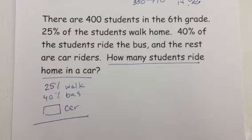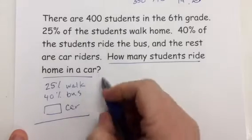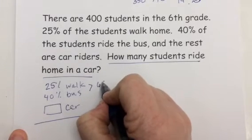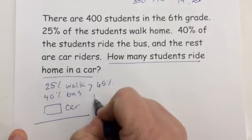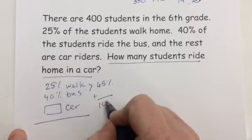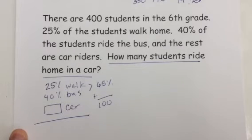It's 100%. So 40 plus 25 gives me 65% plus what number adds up to 100? Well that number, to find that I could subtract.